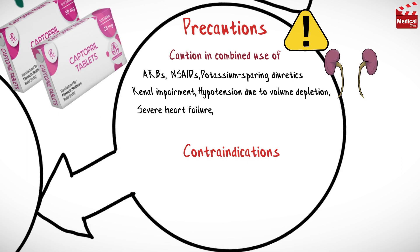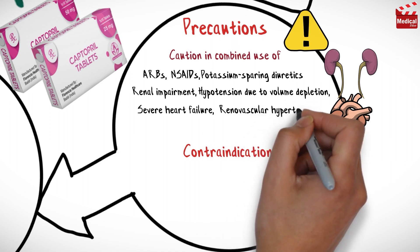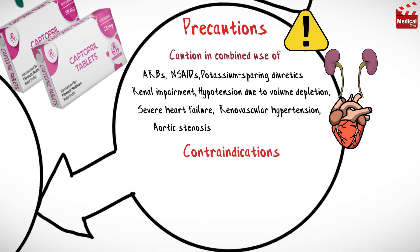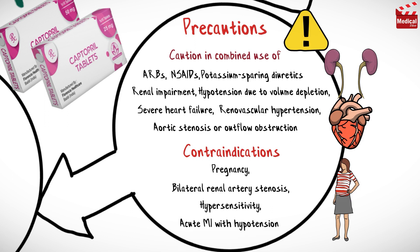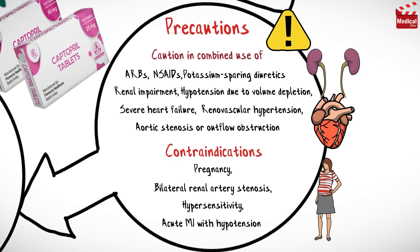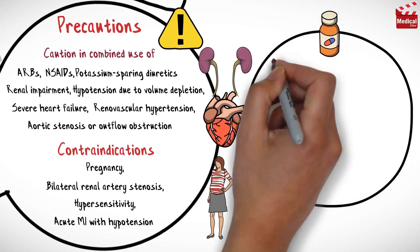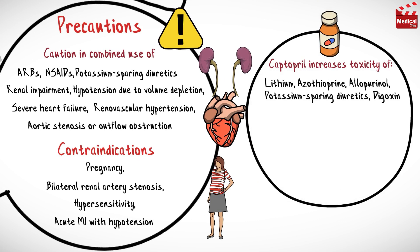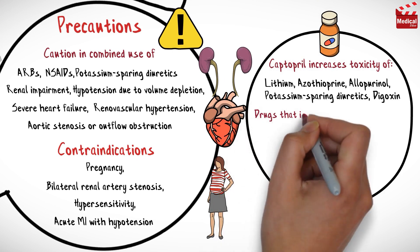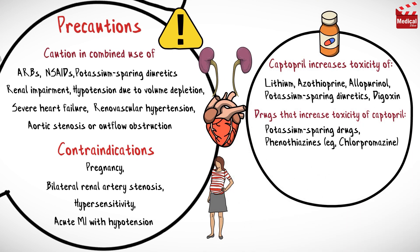Precautions include renal impairment, hypotension due to volume depletion, severe heart failure, renal vascular hypertension, and aortic stenosis or outflow obstruction. Contraindications include pregnancy, bilateral renal artery stenosis, hypersensitivity, and acute myocardial infarction with hypotension.